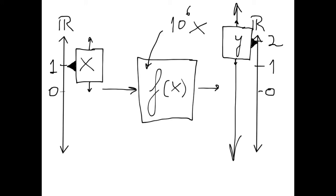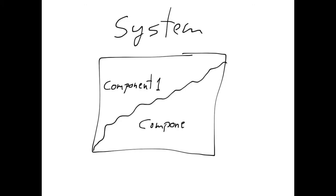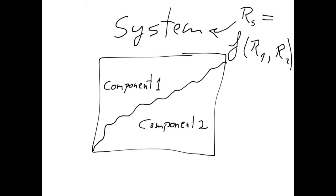Let's now see how all this can help us understand what reliability importance means. Imagine we have designed some system — like a car, airplane, or computer network. Assume, to keep things simple, that the system is composed of just two components: component 1 and component 2. The reliability of the system, R_s, will be a function of the reliability of the first component and the reliability of the second component.